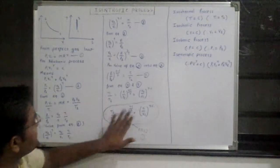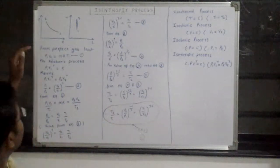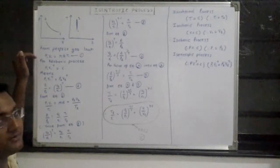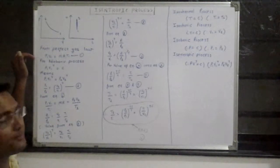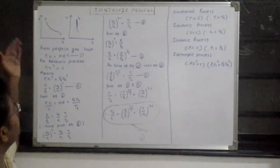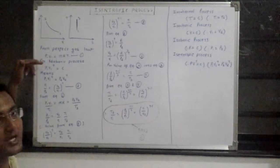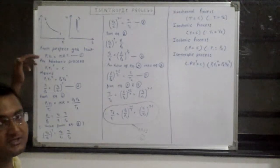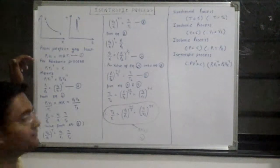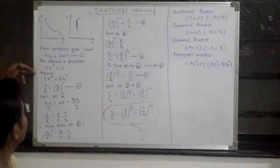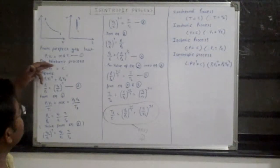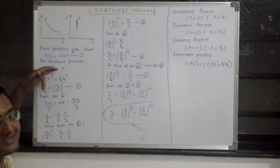In order to derive this equation, let's start with the perfect gas law: P1V1 equals RT1. And for the adiabatic process, PV raised to gamma equals a constant — gamma is the adiabatic index with a value of 1.4. This means P1V1 raised to gamma equals a constant, and the product remains the same for any two points.